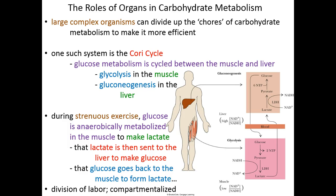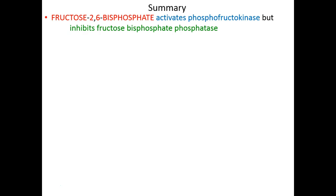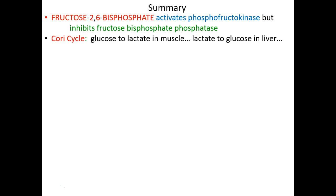This is the division of labor approach — compartmentalization where glucose metabolism occurs in the muscle and lactate metabolism occurs in the liver. To summarize: we started with fructose 2,6-bisphosphate, made only when energy levels drop, which activates PFK to speed up glycolysis and inhibits fructose 1,6-bisphosphatase to slow gluconeogenesis. We then described the Cori cycle as an example of how entire organisms regulate glucose metabolism.